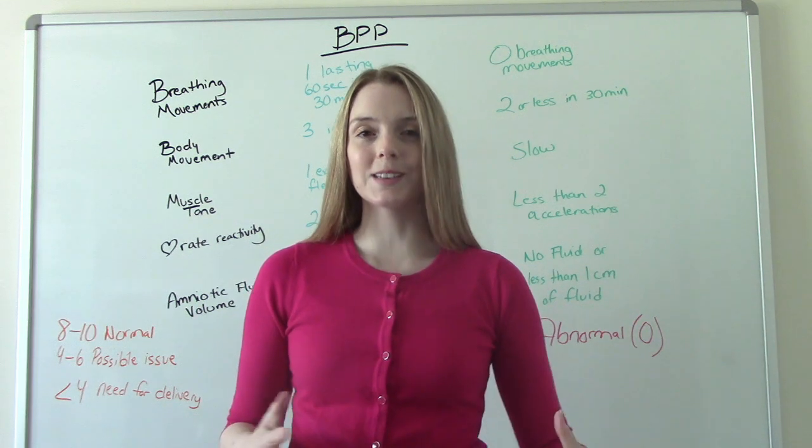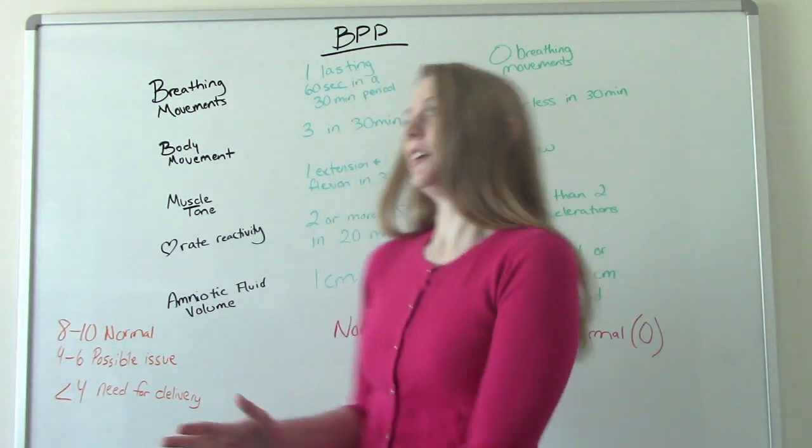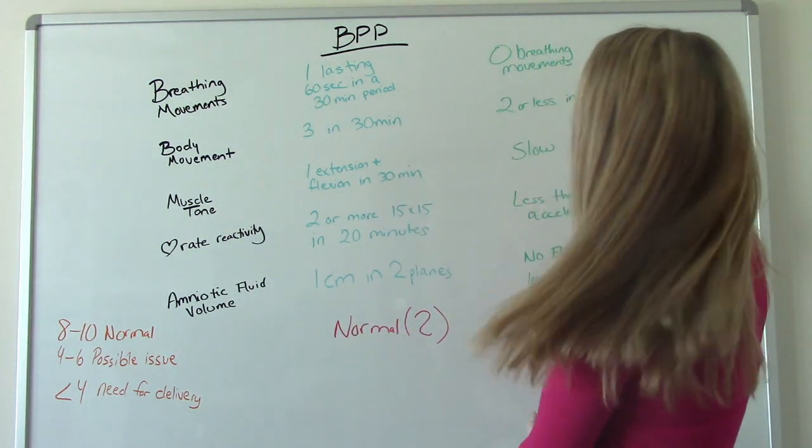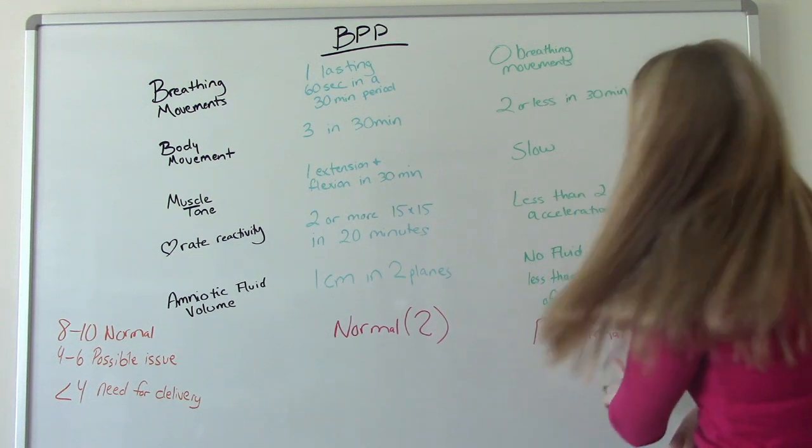So there is a chart with this one. It is a little less complicated because there's only two columns. It's either normal or abnormal. If you're normal you get a score of two, and if you're abnormal you get a zero.